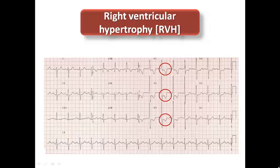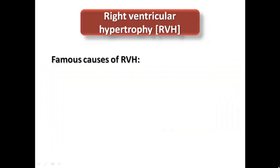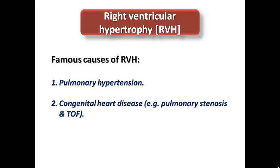In another ECG example, we can see a tall R-wave in V1 of more than 7 mm, nearly right axis deviation with a predominantly positive complex in aVF and biphasic in lead II and negative in lead I, and T-wave inversion with ST depression in V1 to V3, caused by the RV strain pattern. Famous causes of RVH include pulmonary hypertension, congenital heart disease such as pulmonary stenosis and tetralogy of Fallot causing pressure overload on the right ventricle, and arrhythmogenic RV cardiomyopathy.